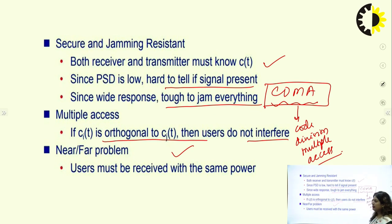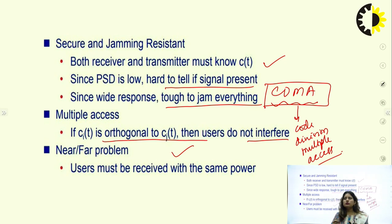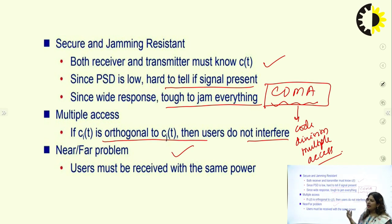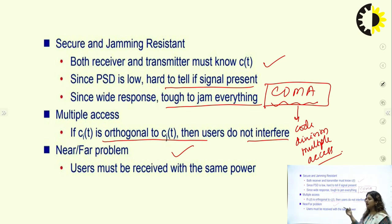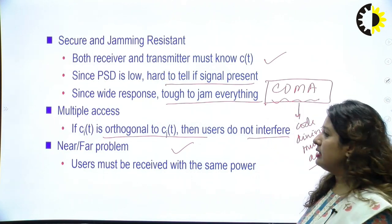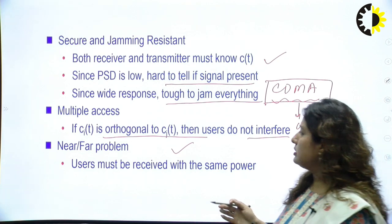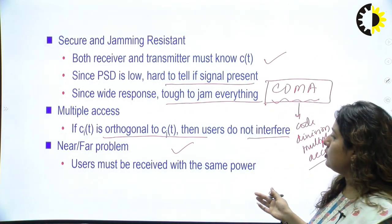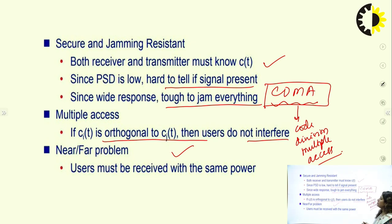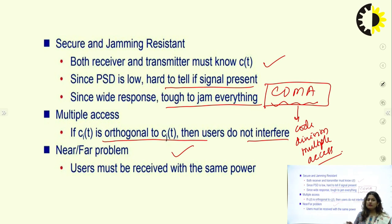One problem or drawback of CDMA is called the near-far problem. Users must be received at the same power level, but in practice all users may not arrive at the receiver with the same power level. Users physically closer to the receiver will propagate with higher power than distant users. The power levels at the receivers are very different from each other, so we must organize or equalize power levels; otherwise the near-far problem will cause interference.